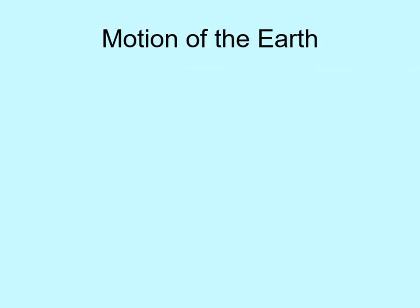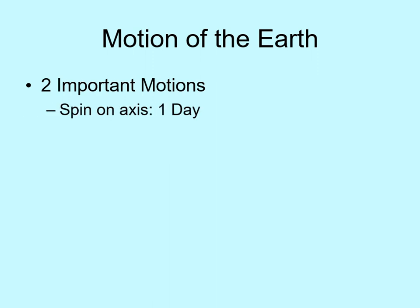Let's start with the Earth's motion through space. There are two important ways the Earth moves. It spins in 24 hours — this defines our day. It also travels around the Sun in 365 days, which is what defines our year.